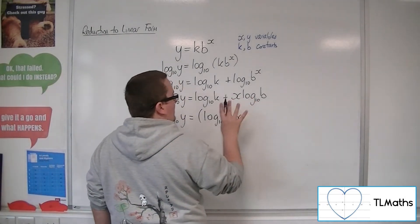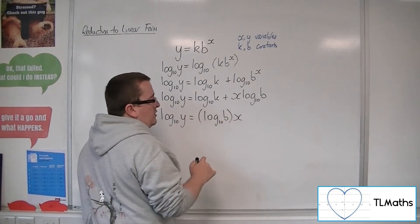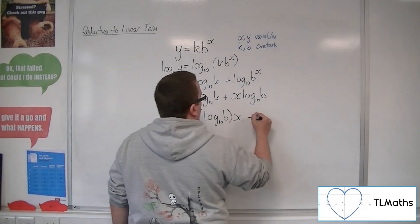It's just we write it like that because it looks a little bit neater. If you write this without the brackets, then it looks like it's log 10 of bx, which is different. And then we've got log 10k.